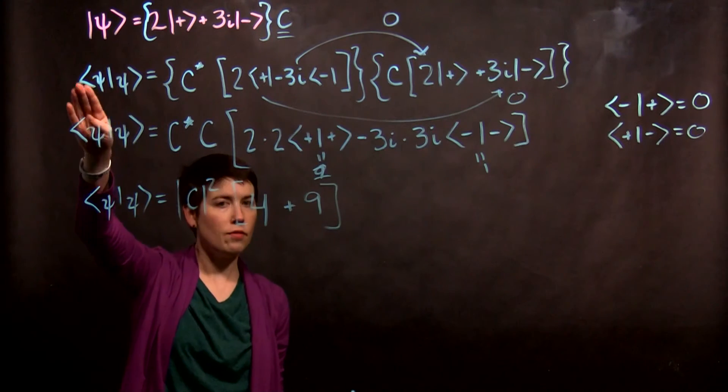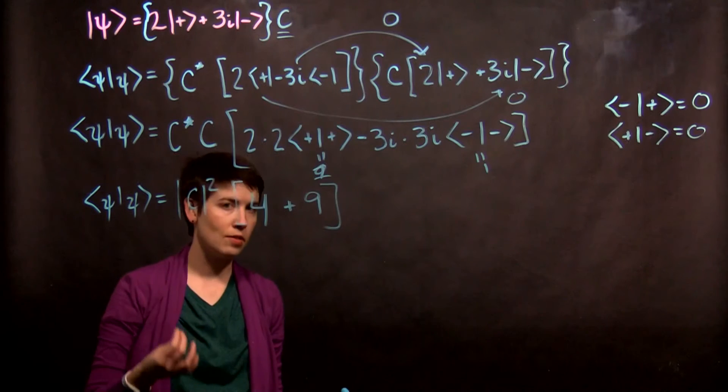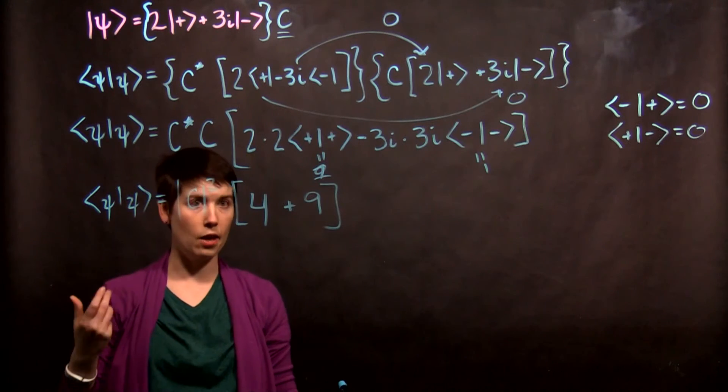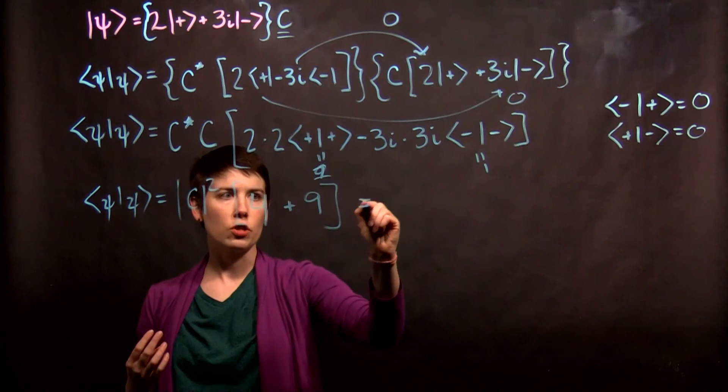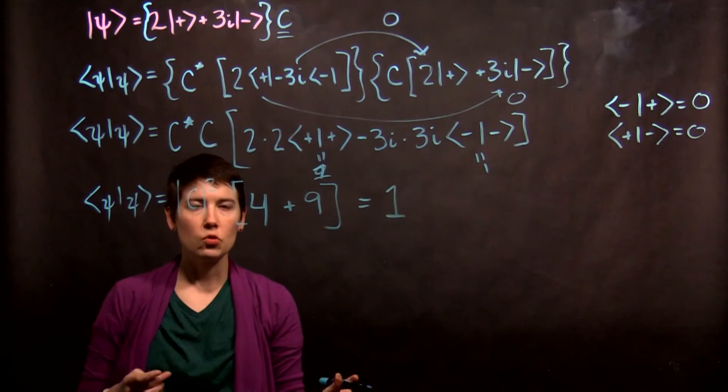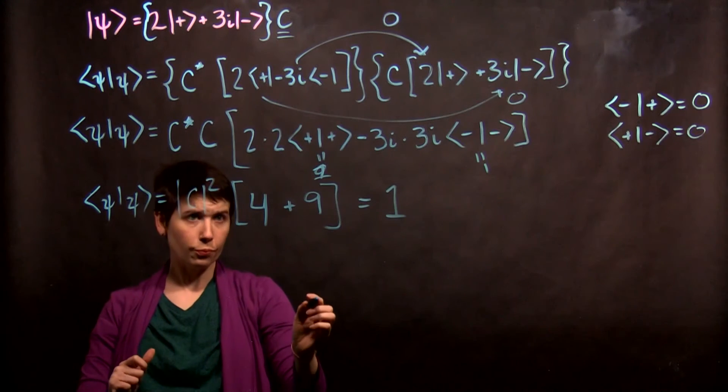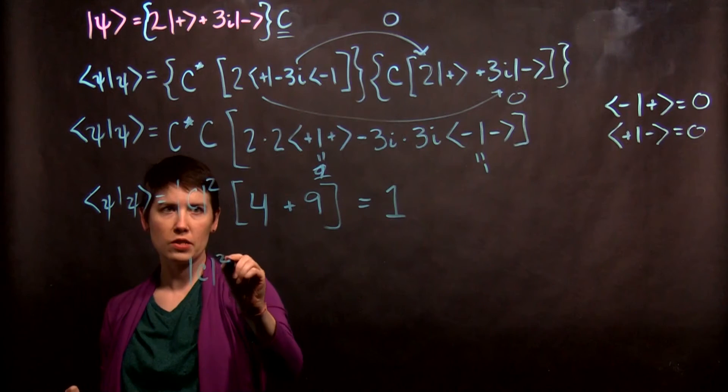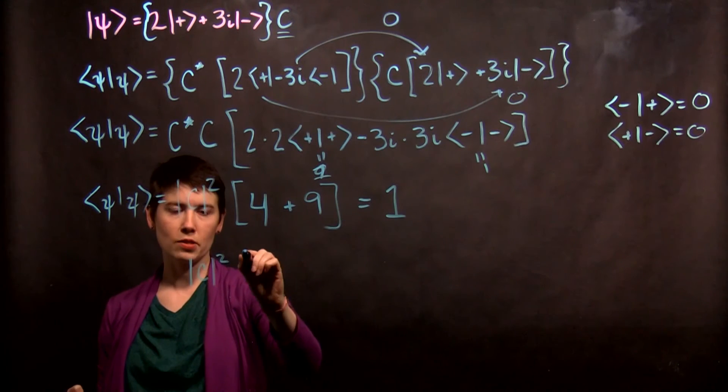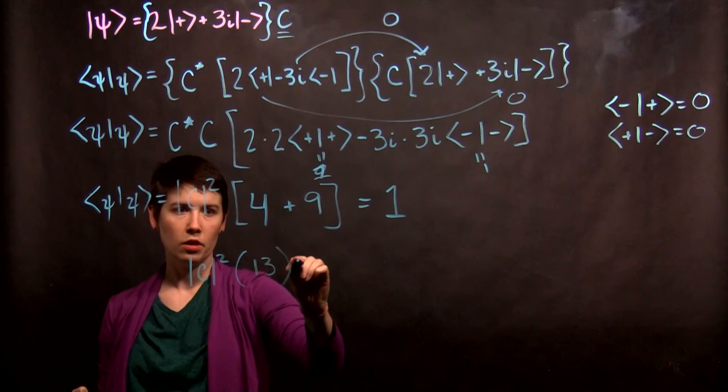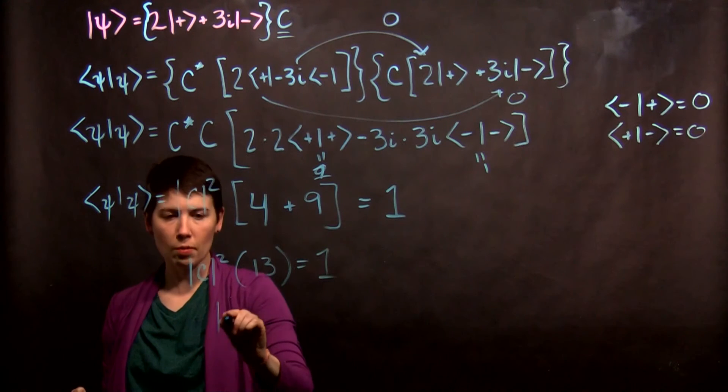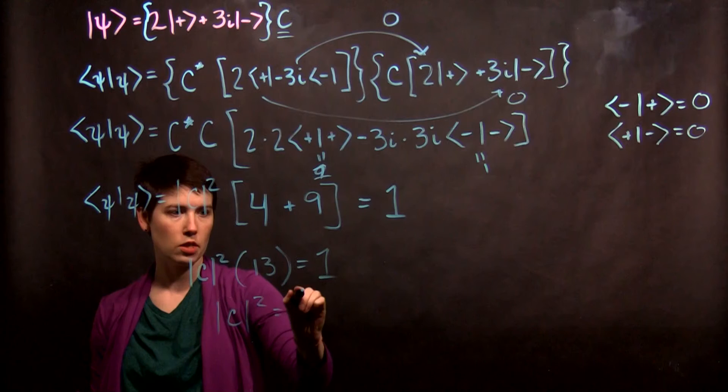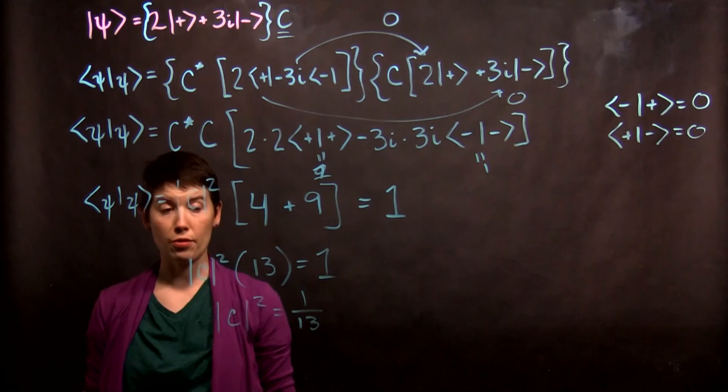And now what do we have if we inner product a normalized vector with a normalized ket with itself? Is that we should have 1. So what we're left with here is an equation that says the magnitude of c squared times 4 plus 9, which is 13, equals 1. So the magnitude of c squared equals 1 over 13.